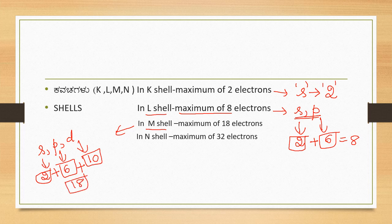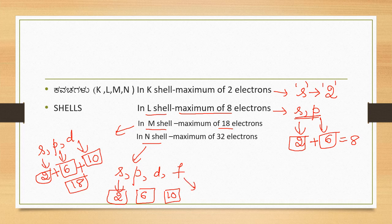In the fourth shell N, there are four sub-shells: S, P, D and F. S holds two electrons, P holds six electrons, D holds ten electrons, and F holds fourteen electrons. Adding these: 2 plus 6 plus 10 plus 14 equals 32. So in N shell, a maximum of 32 electrons can accommodate.